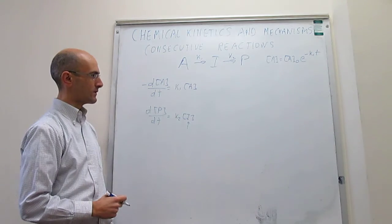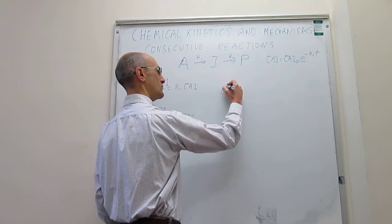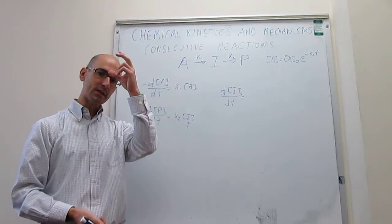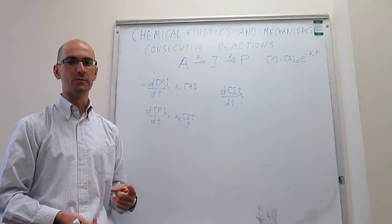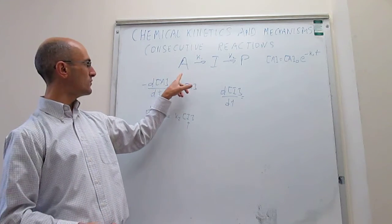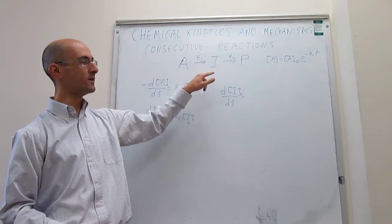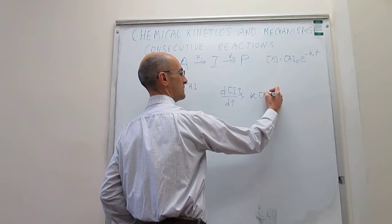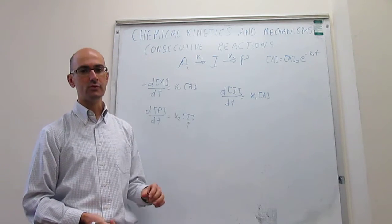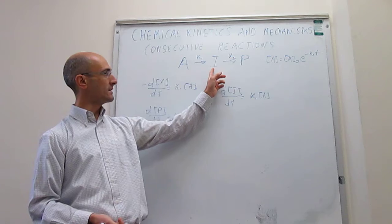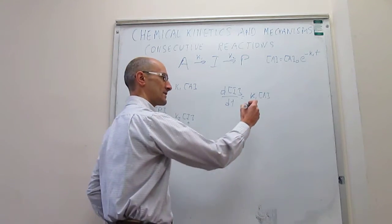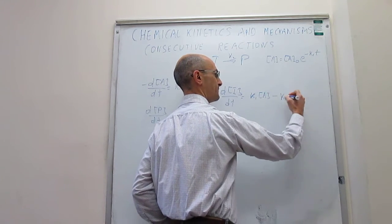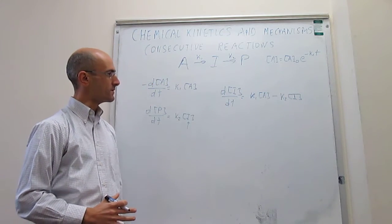To solve for the concentration of the intermediate, we write the rate law for I. The intermediate is interesting because there are two reactions contributing to changes in its concentration. First, there is a positive contribution from A reacting through rate constant K1 to give rise to the intermediate: plus K1 times [A]. Then there is a negative contribution because I is disappearing as it reacts to form products: minus K2 times [I]. That is the total rate law for the concentration of I.